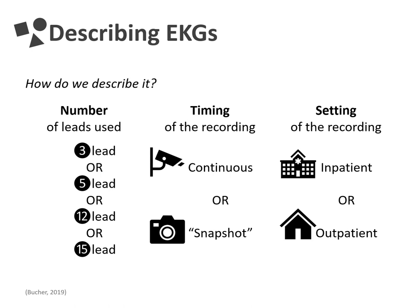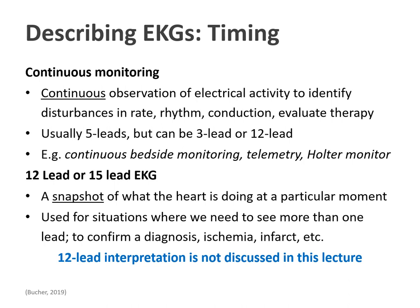Moving on now to different types of EKG tracing. EKGs vary in the number of leads used to collect data, whether these leads are continuously collecting data over a long period of time or only collecting it for a very short snapshot of time, and finally whether the data is being collected in the home or hospital setting. A healthcare provider may prefer to use continuous EKG monitoring where there's the potential for ongoing changes in rate, rhythm, or conduction, or to evaluate therapy. They may also alternatively use a 12 or 15-lead EKG when they need to see more than one lead, confirm a diagnosis, or are concerned about ischemia or infarct.